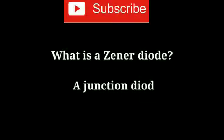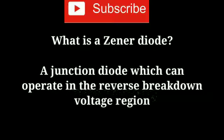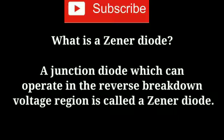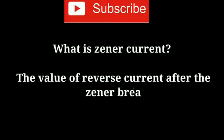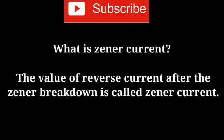What is a zener diode? A junction diode which can operate in the reverse breakdown voltage region is called a zener diode. What is zener current? The value of reverse current after the zener breakdown is called zener current.